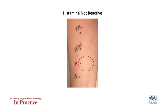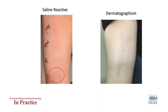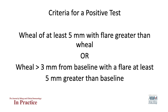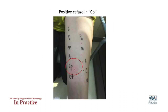Common reasons for a negative histamine test include inappropriate placement of the test or inhibition by medications, often antihistamines; chronically ill patients may also not respond appropriately. Then make sure that you do not have a positive saline or glycerin test — the saline control should be clearly negative. Common reasons for positive saline include dermatographia and chronic urticaria. For most drugs, a positive test will meet criteria such as a wheal of at least 5 mm with flare greater than wheal, or wheal greater than 3 mm from baseline with a flare at least 5 mm greater than baseline. Measure the widest diameter at each site.